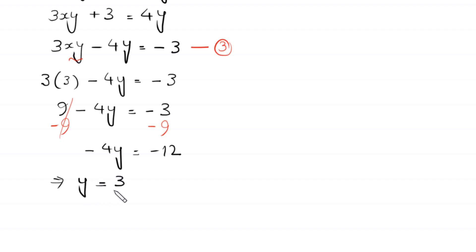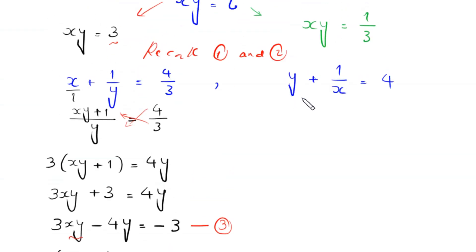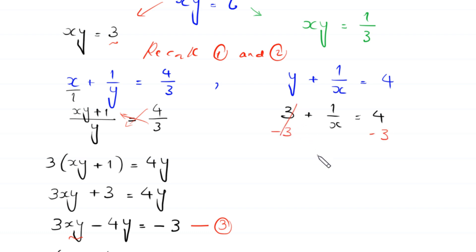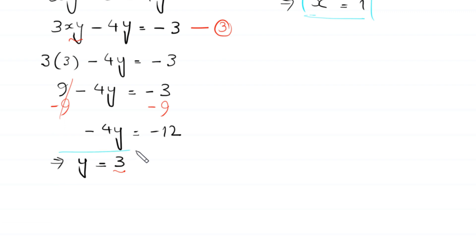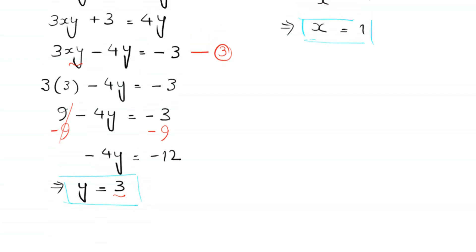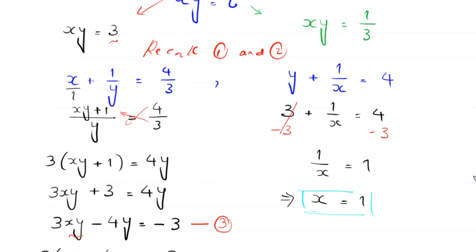We put y equals 3 into equation 2: 3 plus 1/x equals 4. Subtracting 3 from both sides: 1/x equals 1, which implies x equals 1. So we get the first pair of solutions: x equals 1 and y equals 3.